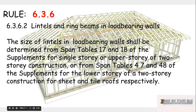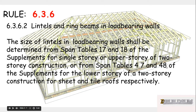We then need to look at our lintel rule to work out which span table we're going to use. Rule 6.3.6 on lintels and ring beams says that the size of lintels in load-bearing walls shall be determined from span table 17 for sheet roofing and table 18 for tile roofs, for a single storey or upper storey of a two storey construction. For the lower storey of a two storey construction it's tables 47 for sheet and 48 for tile. We've got a single storey sheet roof, so we're going to use table 17.